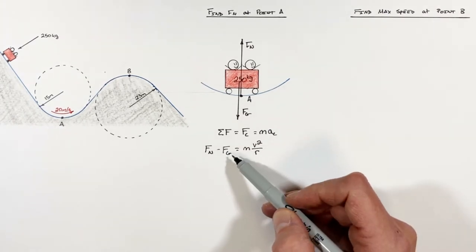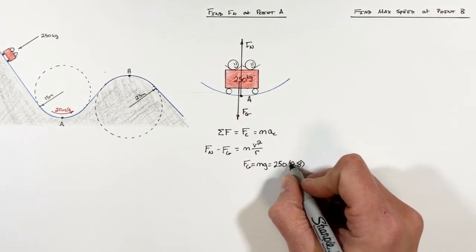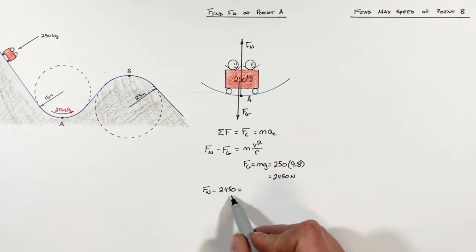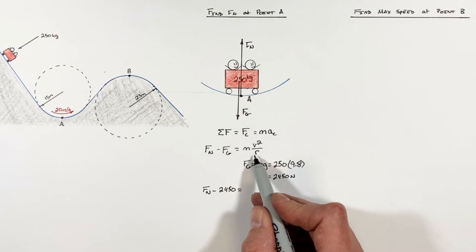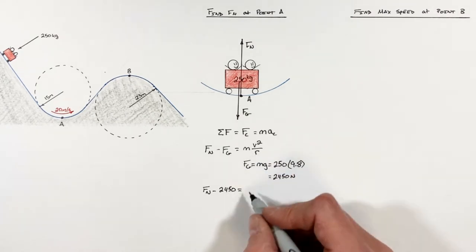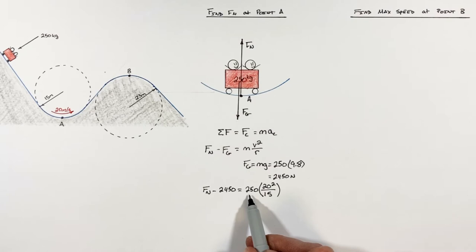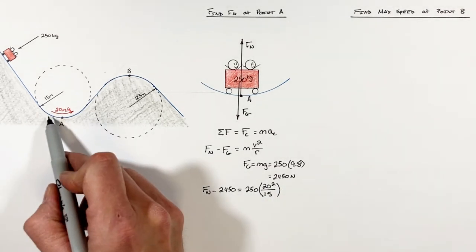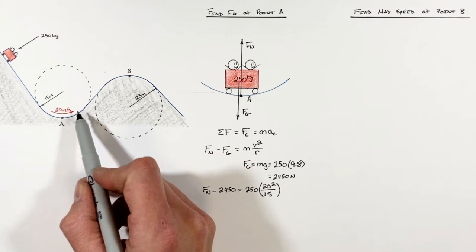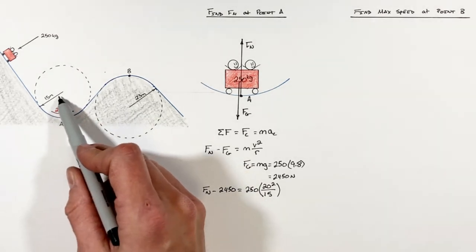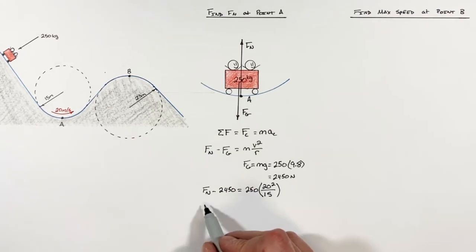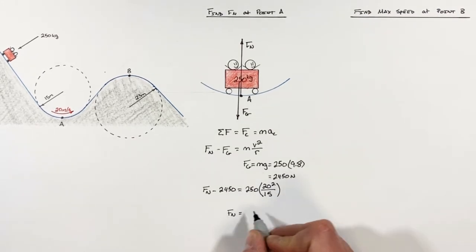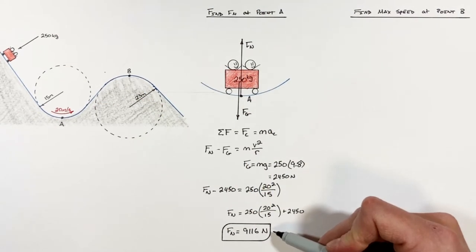Now we can solve for the force by gravity on the cart. And subbing that in we get this expression for our net force. Now on the right side of the equation we've got centripetal force so we can sub in our given values here, where the mass of the cart is 250 kilograms, the cart is going 20 meters per second as it goes through this trough, and the radius of curvature at point A is 15 meters. So rearranging this for FN we get the normal force at A is 9,116 newtons.